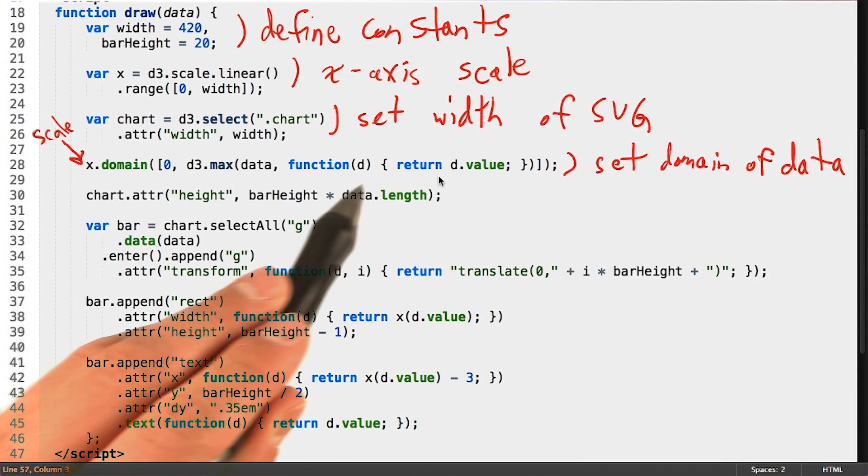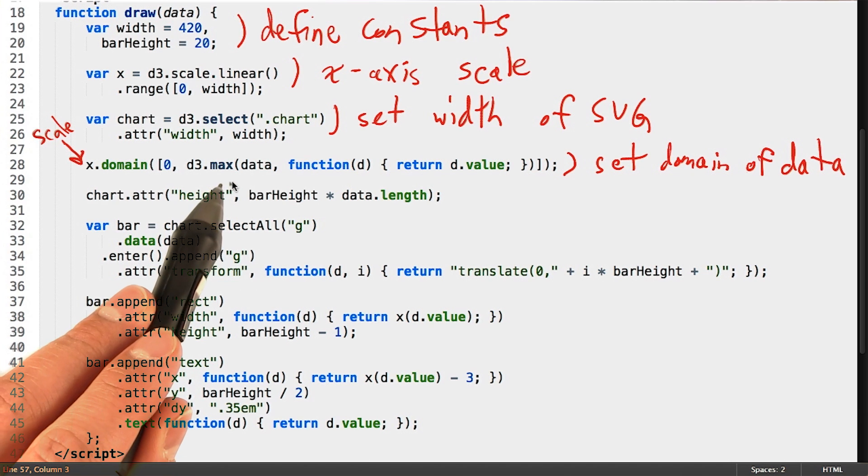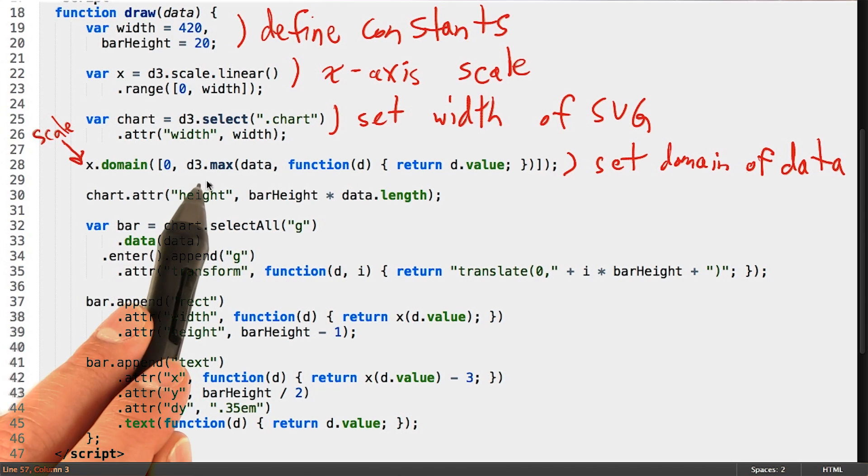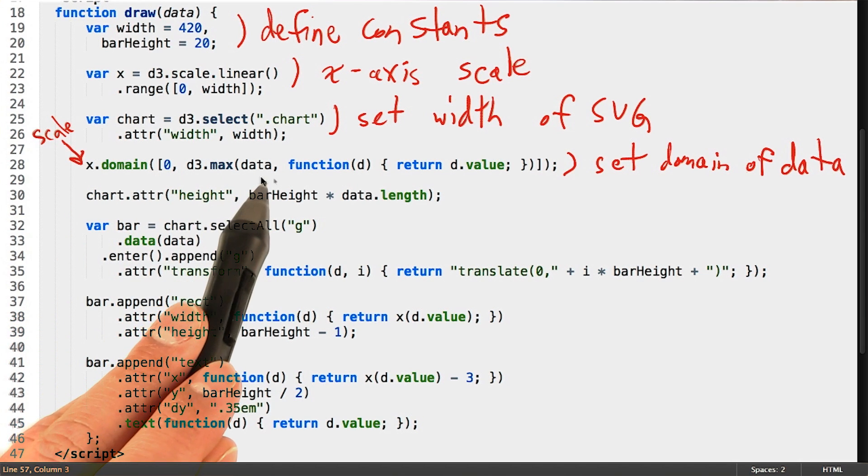The reason we need to pass a function is that d3, being the data-driven library it is, could have different ways of defining the max of the domain for a given data.